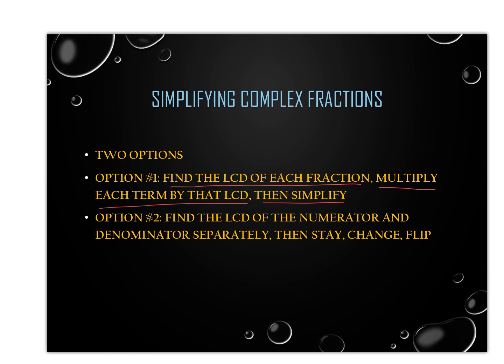That would actually be my option two - it's not my preferred method. Option two is my preferred method, where you treat the numerator and denominator like separate expressions. You simplify the numerator by finding the LCD, do the same for the denominator, and then do the stay, change, flip, and solve. I'll start with that one and eventually teach you the other, and you'll choose the method that works best for you.